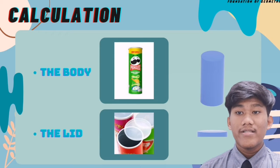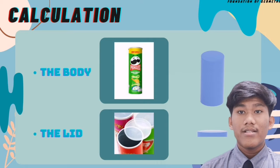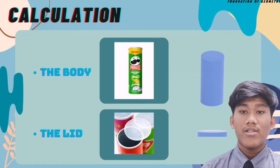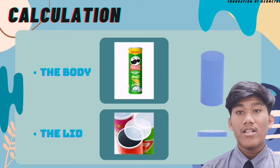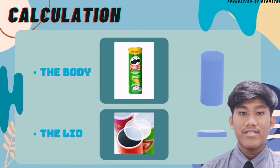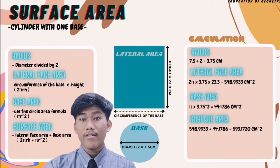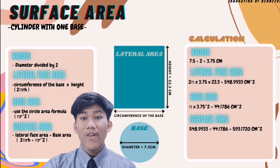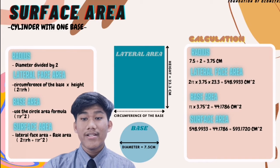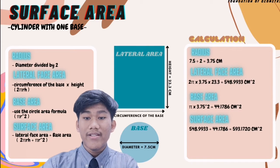For the calculation, we will calculate the body and the lid of the potato chip tube. As we can see, the shape for the body is a taller cylinder while the lid is a shorter cylinder. To calculate the surface area of the body, we need to find the radius, lateral face area, and base area, then total them up to get the total surface area.